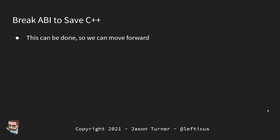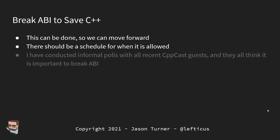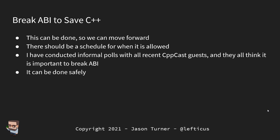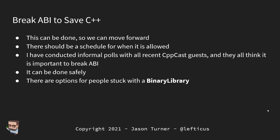Break ABI to save C++. I think this can be done, and there should be a schedule for when it is allowed — the committee voted not to do it but didn't establish when it could happen next. As co-host of CppCast I've conducted informal polls with all recent C++ guests, and not a single person said it's important to maintain ABI stability; every person said we should break ABI to move forward. I believe it can be done safely, with a path forward for those stuck with old binary libraries. Thanks for watching.